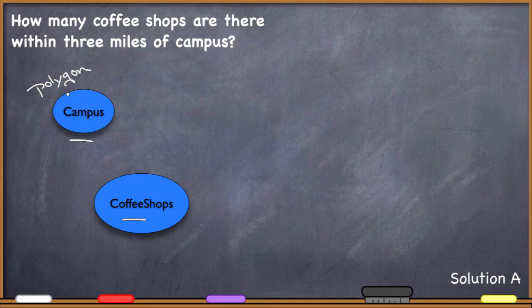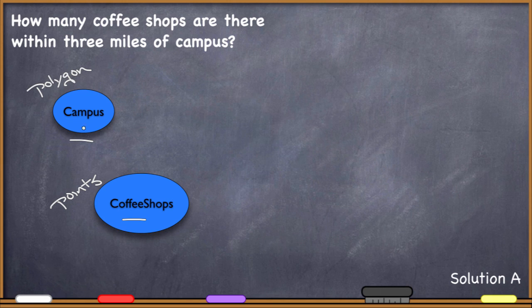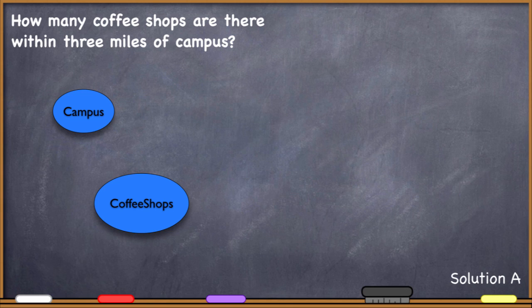For the sake of example, let's say these are vector data files — maybe shapefiles. The campus data file is a polygon file. The coffee shops could be polygons too — maybe we have the footprint of all coffee shops in the city — but let's say they are points, since campuses are areas and it's perfectly reasonable to have a point for every coffee shop. So our original data consists of a campus file and a coffee shops file.